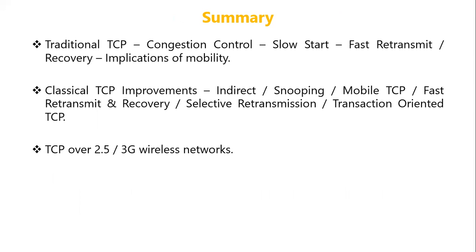We have discussed what traditional TCP is and how it works, and why traditional TCP cannot be used in a mobile network. The problem with traditional TCP is that it always assumes congestion when there is a packet loss and goes into slow start. But this is not the scenario in a wireless network — data loss may not always be due to congestion, but due to several other factors such as inconsistent wireless links and interference.